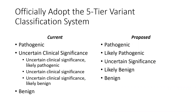Briefly, the major changes are: officially adopting the five-tier variant classification system put forth in Richards et al.; the recommendation to uncouple variant classification from clinical interpretation; and incorporating a quantitative evidence-based evaluation framework into the classification process. The first major change is moving from the three-tier system in Kearney et al. to the five-tier system in Richards et al. The original CNV guidelines grouped likely pathogenic and likely benign under the classification of uncertain. Moving these to distinct categories will allow CNV classifications to more closely align with sequence variant classifications. Anecdotally, many CNV labs were already moving toward this, so hopefully this transition should be relatively straightforward.